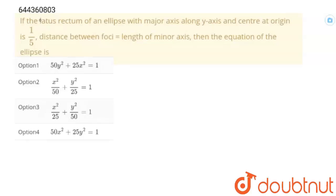Hi students. The question is: if the latus rectum of an ellipse with major axis along the y-axis and center at origin is 1/5, and the distance between foci is equal to the length of the minor axis, then find the equation of the ellipse. Let's solve this.